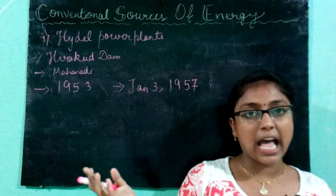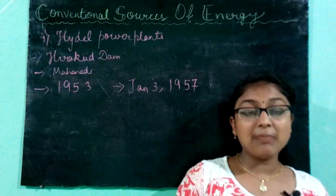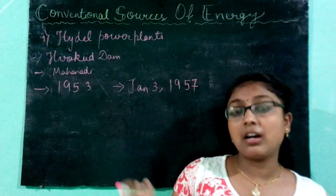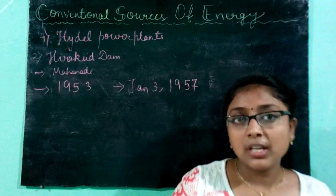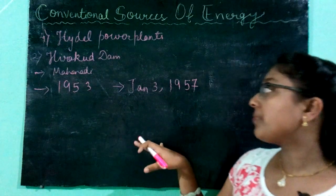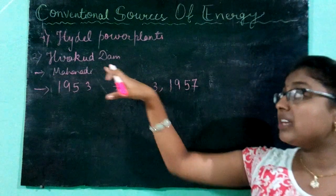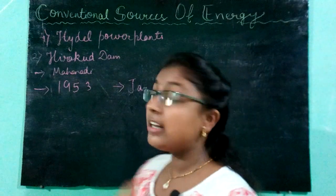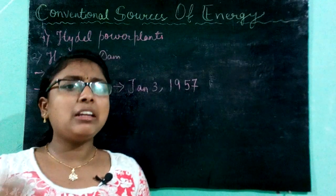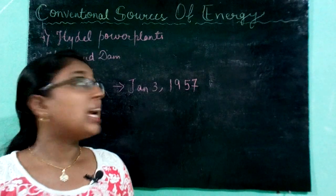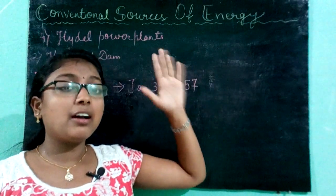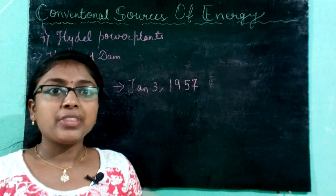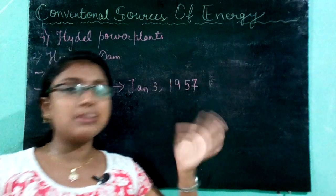During the construction of the Hirakud Dam, it is said that many diamonds were also excavated from the area where construction works were done. It is also said that many people died while making this project — though these are extra details not in the syllabus.